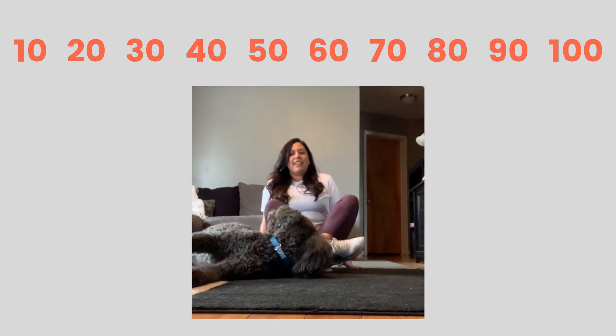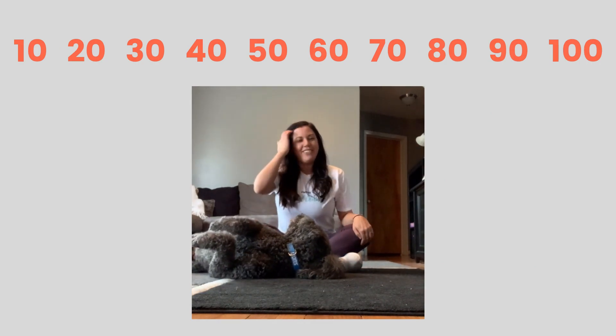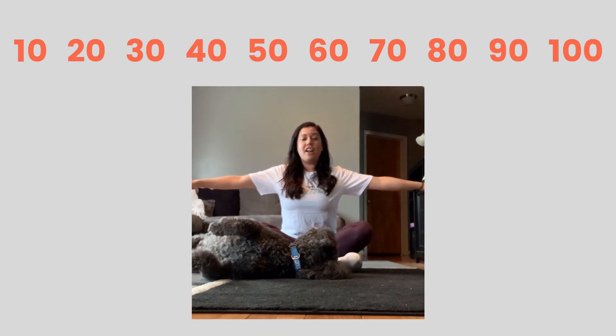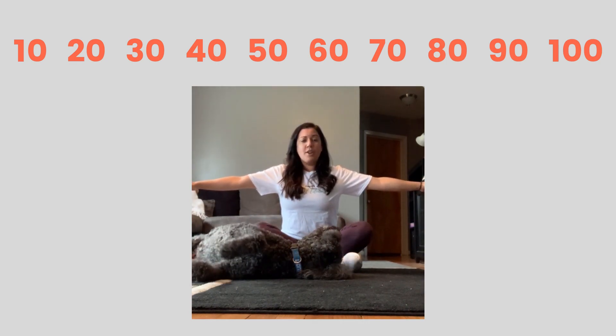You can stay right on the ground, right where you are. We'll make it easy for you. And we're going to do our arm circles forward and then backward. So make sure you're counting along. We're going to start with forward. Ready?